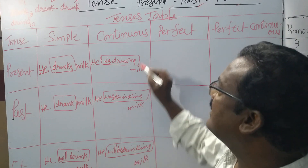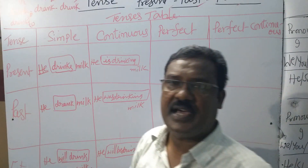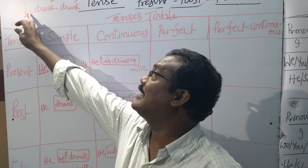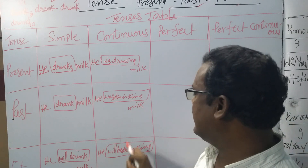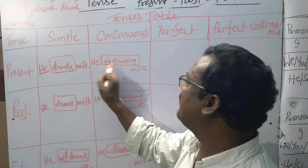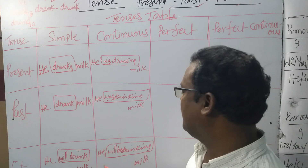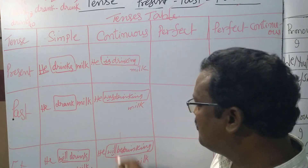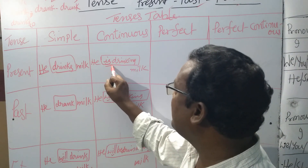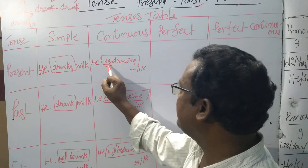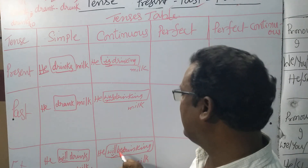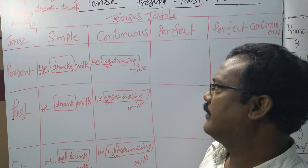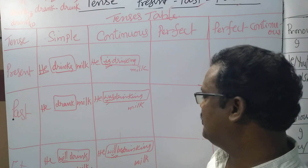So, my dear students, continuous tense means V1 verb + ing — and then we add the B form. Present B form: is; past B form: was; future B form: will be. Already we discussed B forms. So if you want to write continuous tense, add the appropriate B form: is drinking, was drinking, will be drinking. Continuous tense means V1 verb + ing.